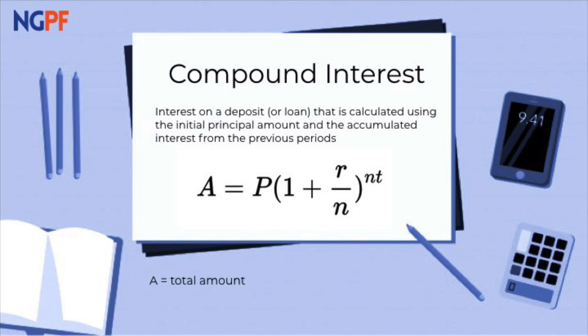A is the final amount. P stands for initial principal, which is the amount of money you're starting off with in your account. R is the interest rate. Be careful, it must be converted into a decimal here.